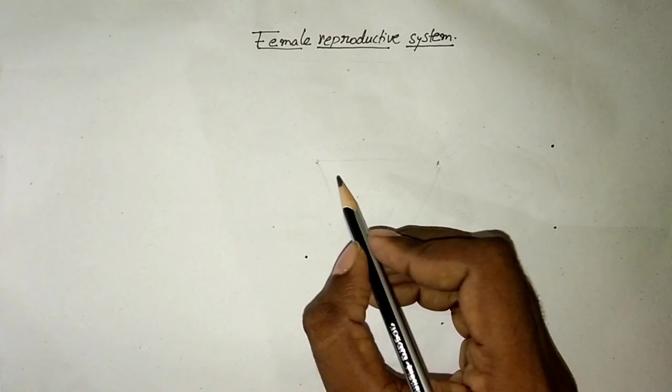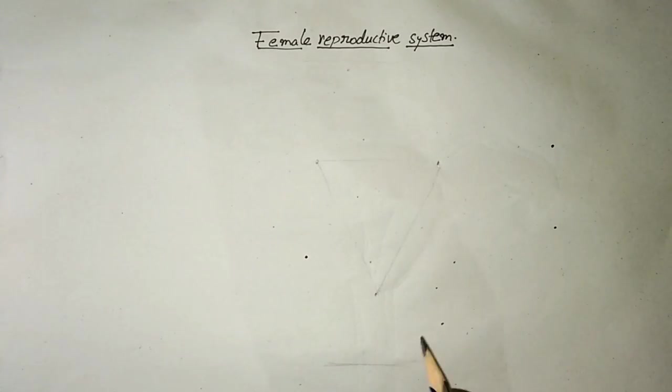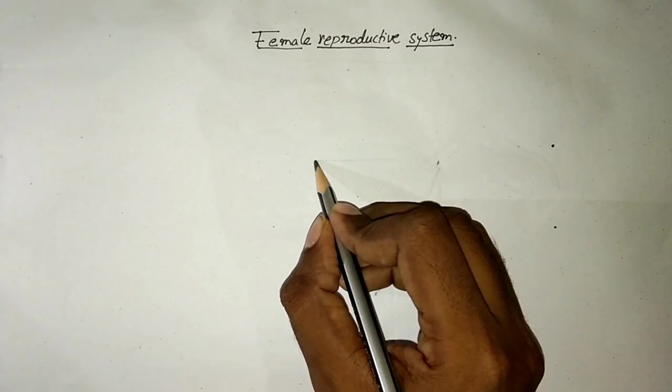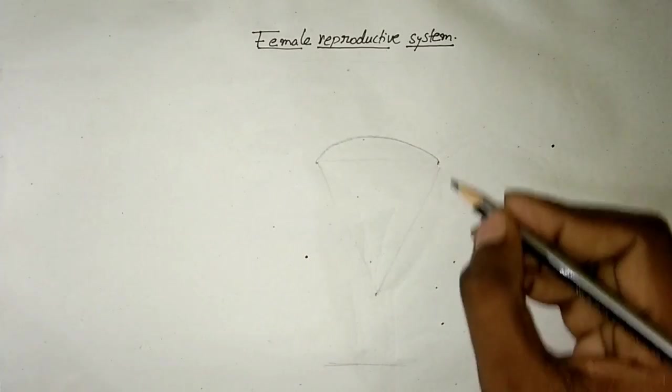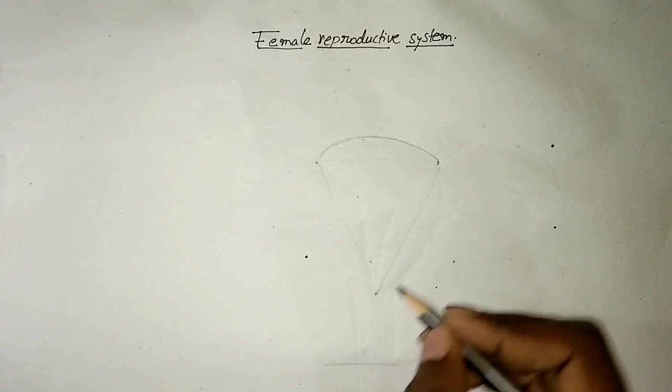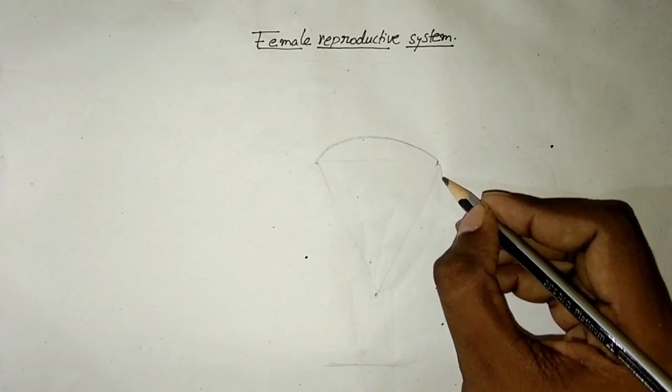Now I am going to draw the outer body of the uterus by joining the two dots using curves. Now I connect the two dots like this, and on the other side I connect the two dots.